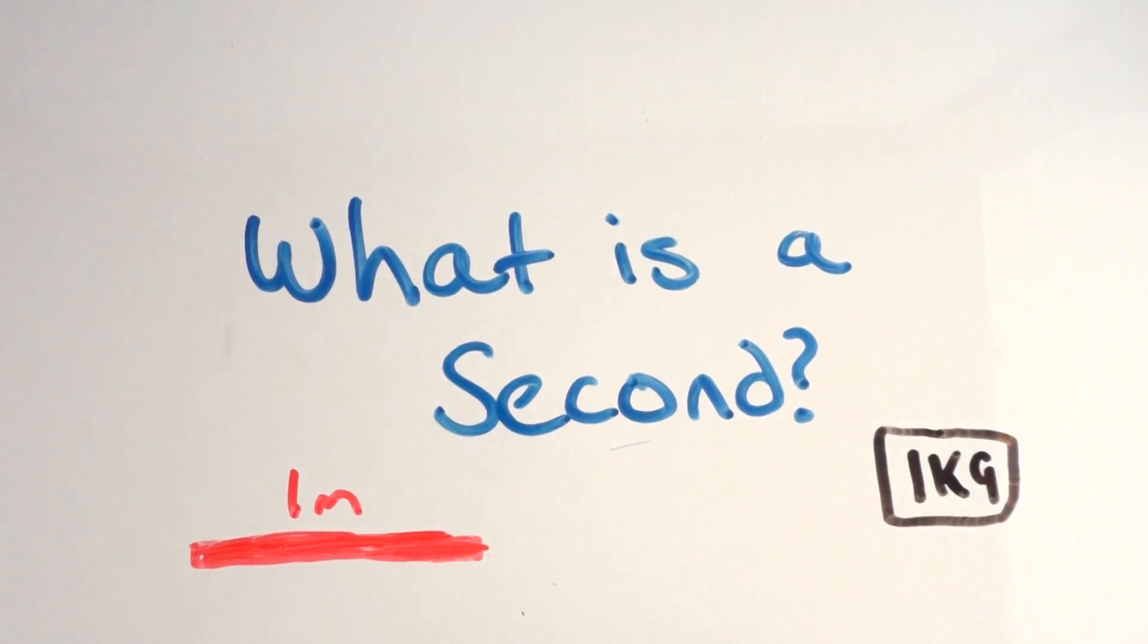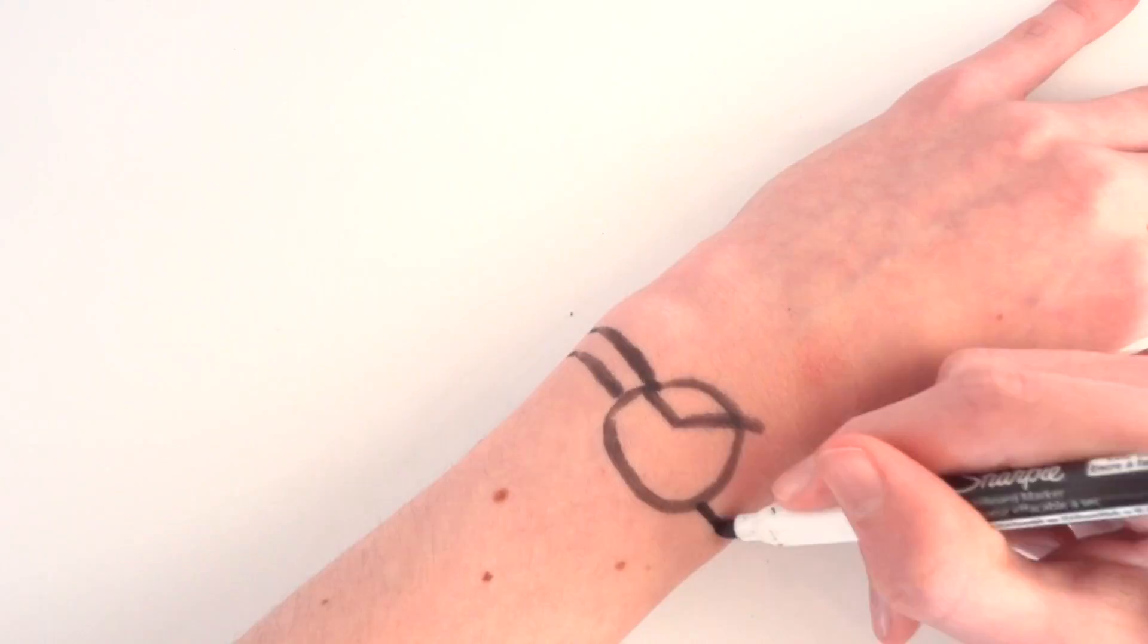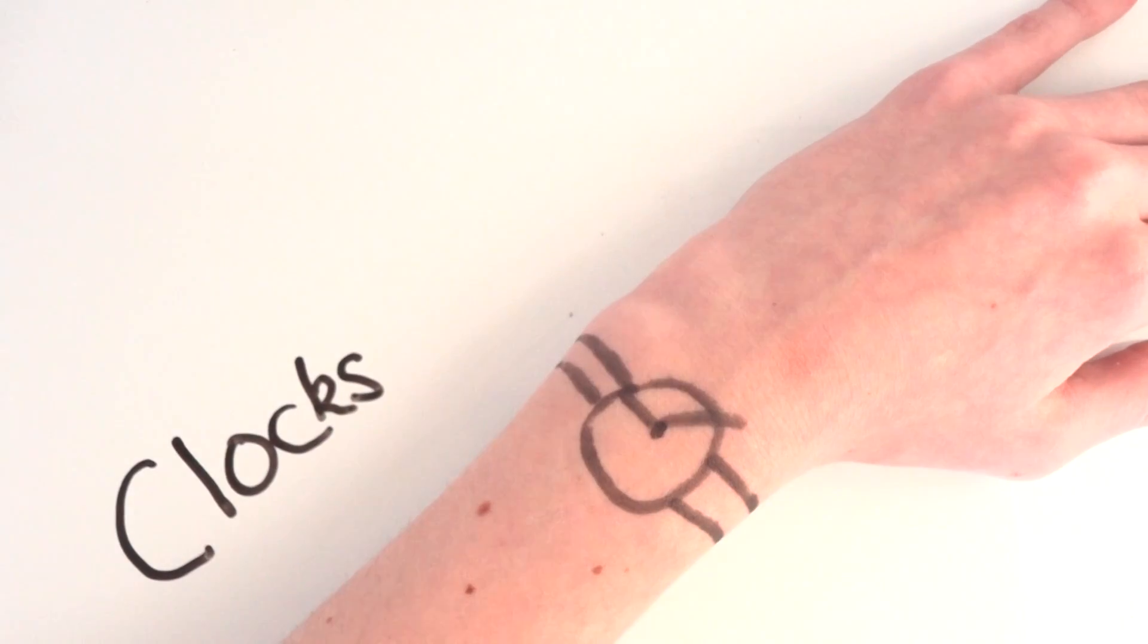Firstly let's start off with time. What is a second? For most of us a second is how long a clock tells us a second is. Trying to explain to someone what a second is is quite hard. Try to think about what a second actually is without using a stopwatch or a clock. It's quite hard.